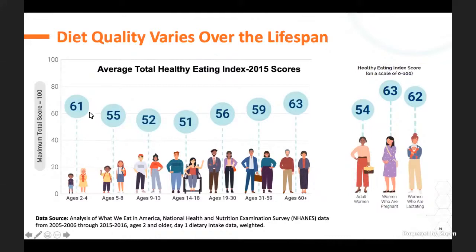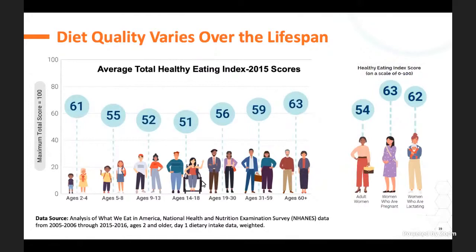When you drill down a bit deeper by age group, the two-to-four-year-olds and older Americans do a little better. We see a big dip in teenagers—not a big surprise to parents. When looking at the pregnancy and lactation committee data, we're thinking these are our future mothers. The data was described as sort of a train wreck in terms of nutritional status. Talking to young women and teenagers about achieving healthy body weight and getting adequate iron, folate, calcium, and other micronutrients is very important.